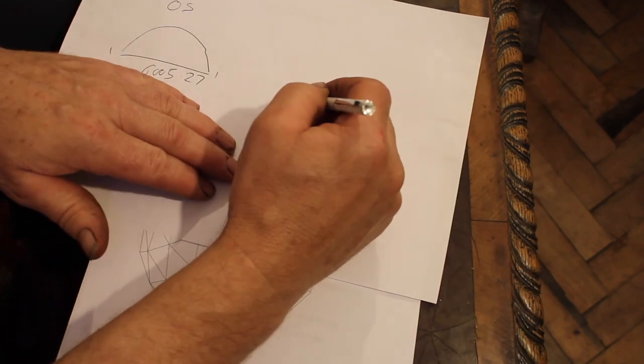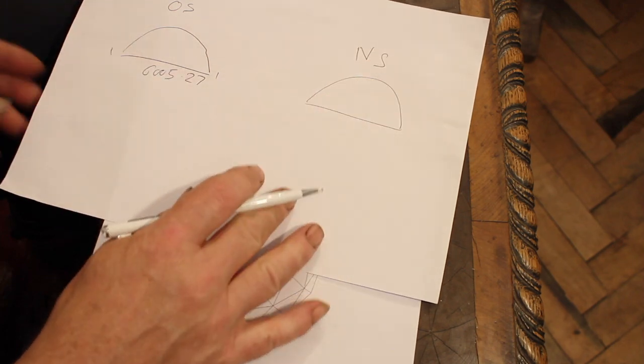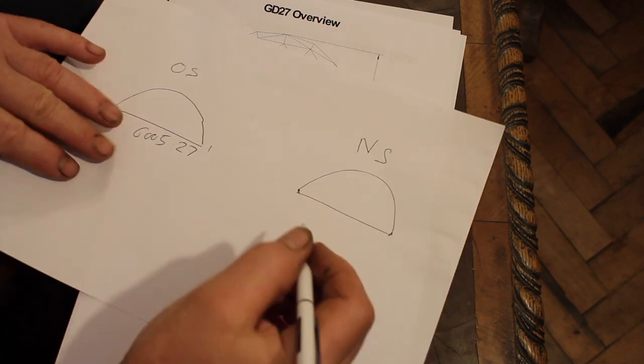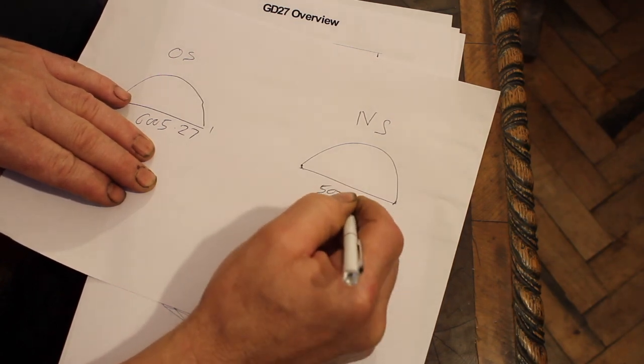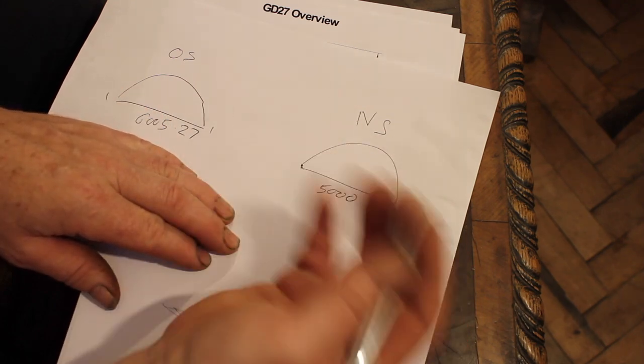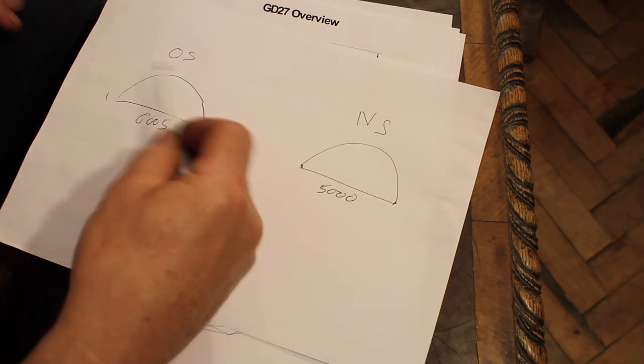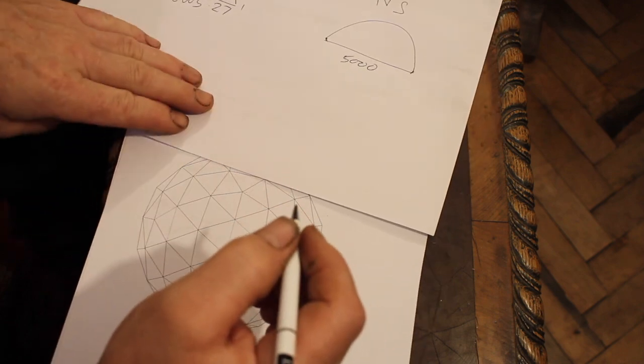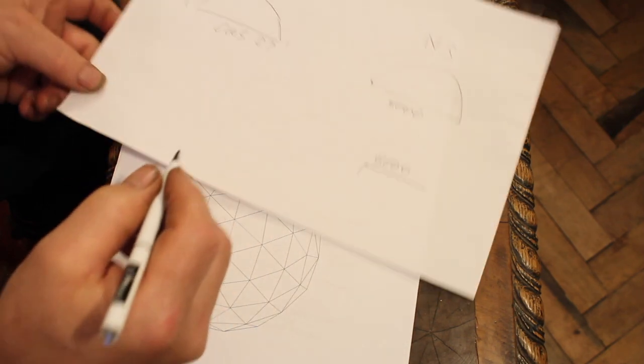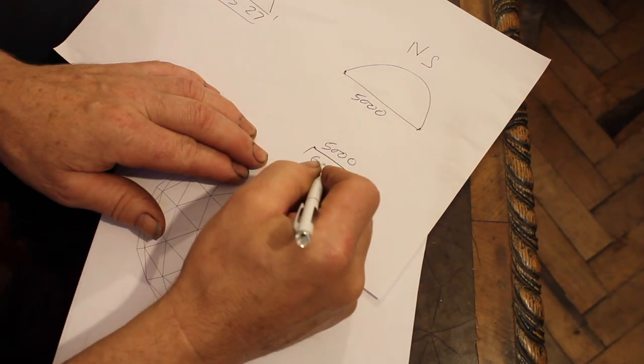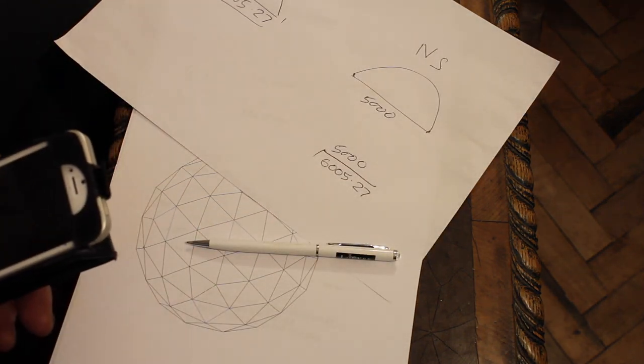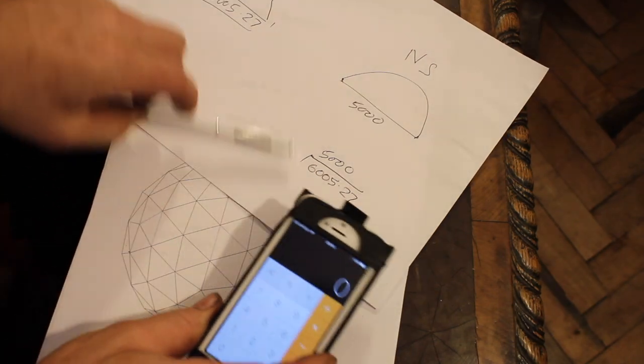We're going to work with that for the time being. Now we'll call this one NS, which is a new size, and this is the dome size that we want. So let's say if we wanted this one to be exactly 5000 millimeters, it's a five meter, so we're going to reduce it a meter. It doesn't matter, this works exactly the same if you're trying to make it bigger or smaller. So what you do is you take the size that you want, 5000, and you divide that by the old size, 6005.27.